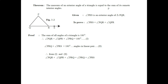Comparing equations one and two, since both right-hand sides equal 180°, the left-hand sides must be equal. So angle PQR + angle QPR + angle PRQ = angle PRQ + angle PRS. Cancelling angle PRQ from both sides, we get angle PQR + angle QPR = angle PRS.